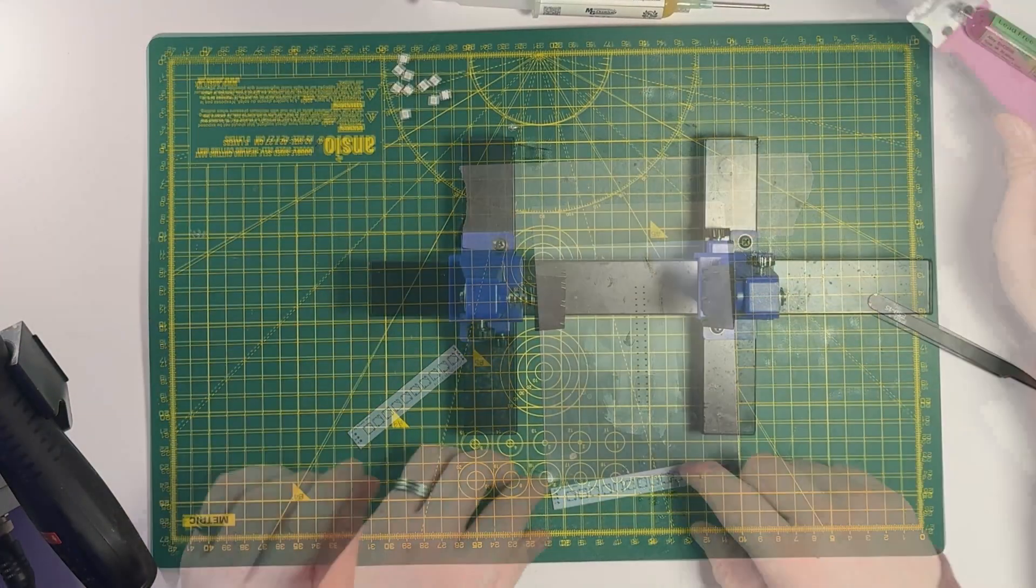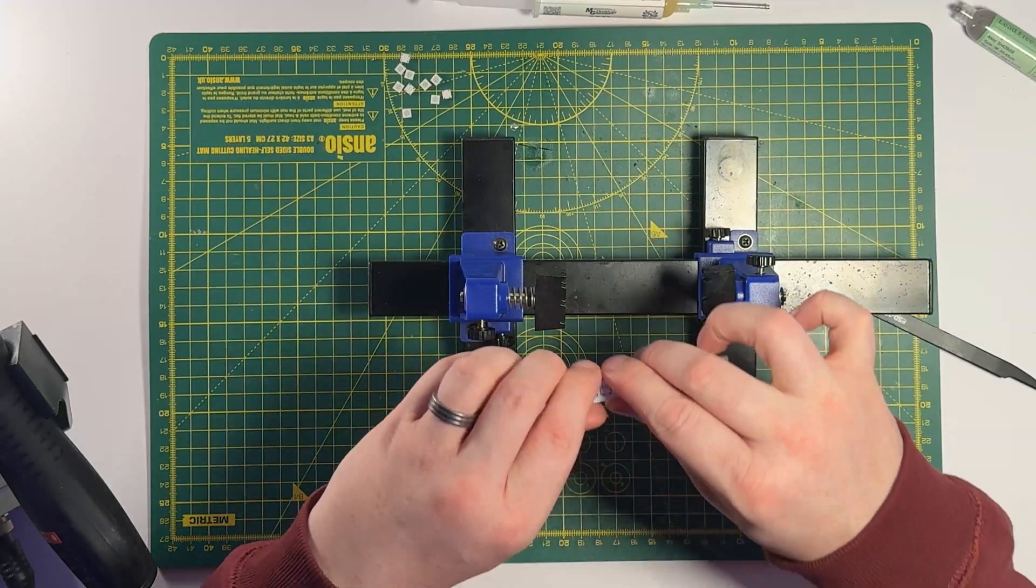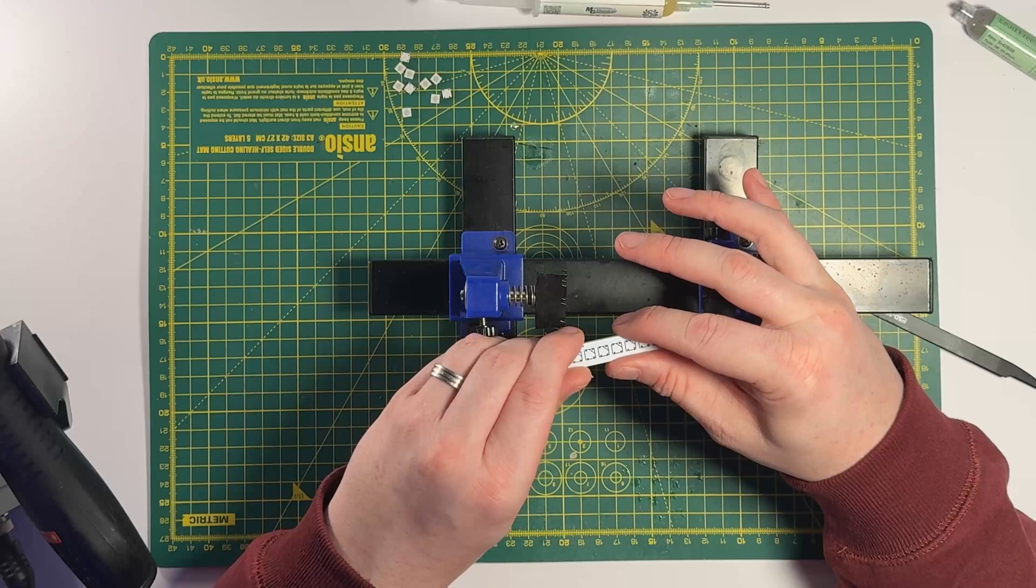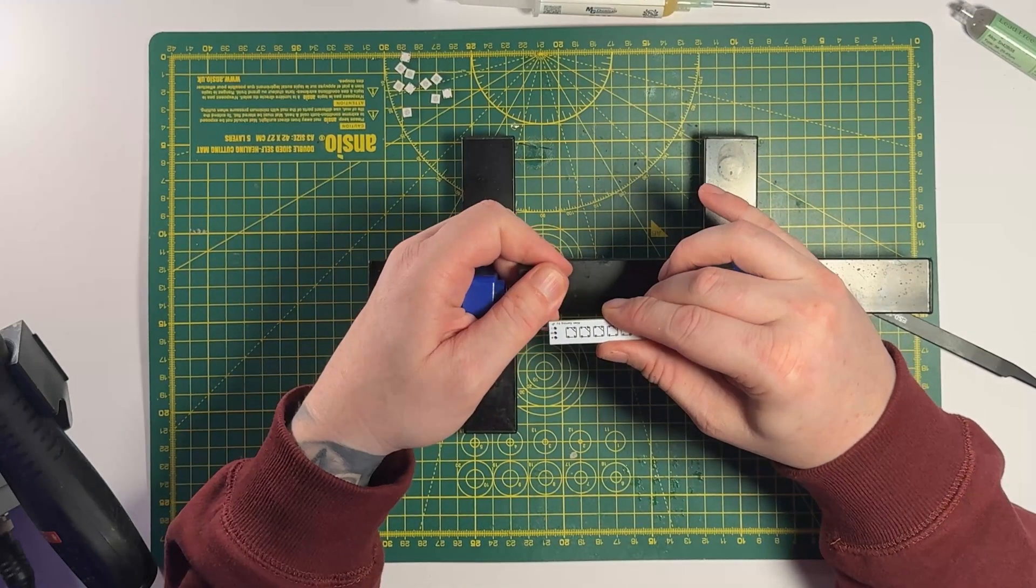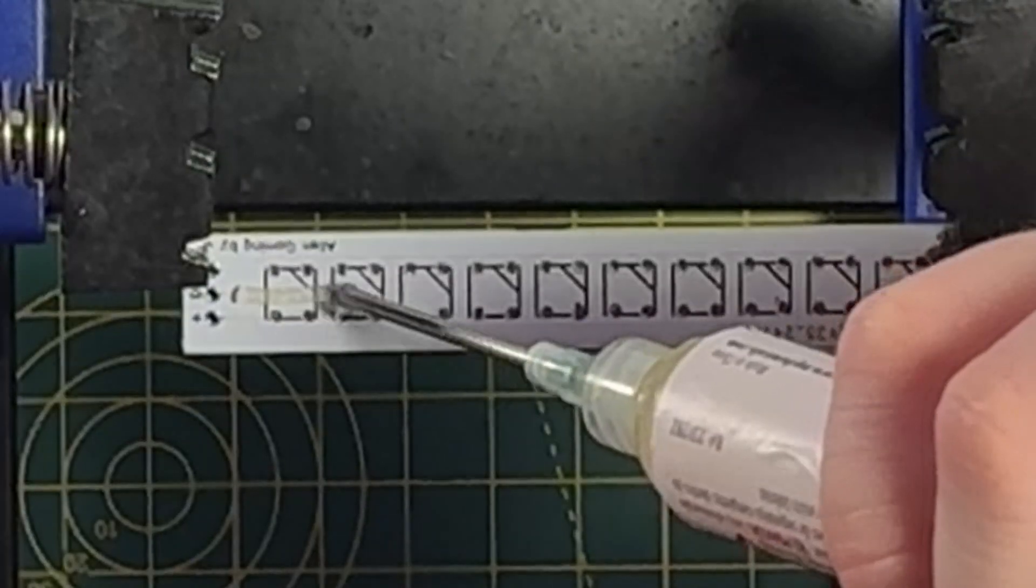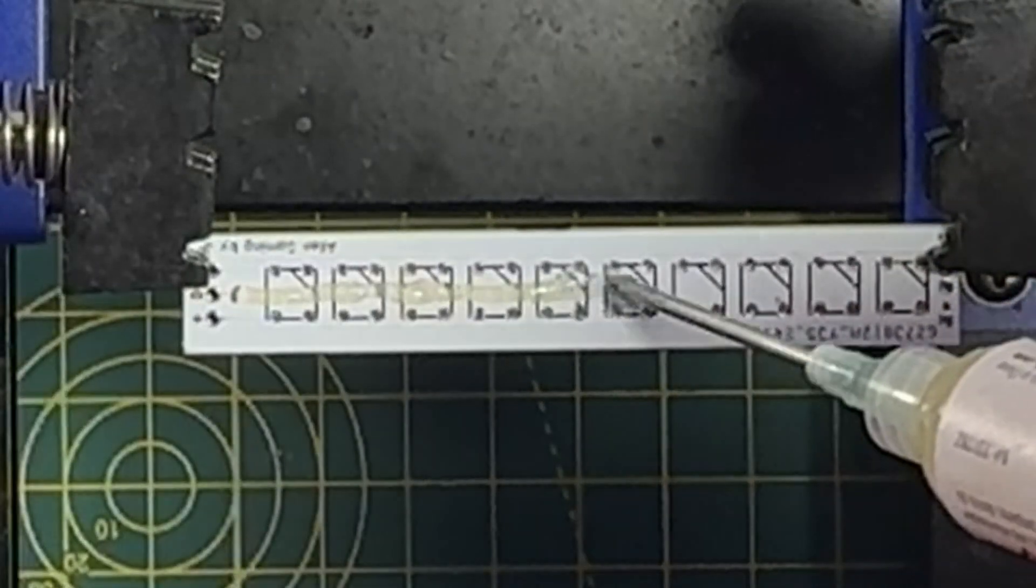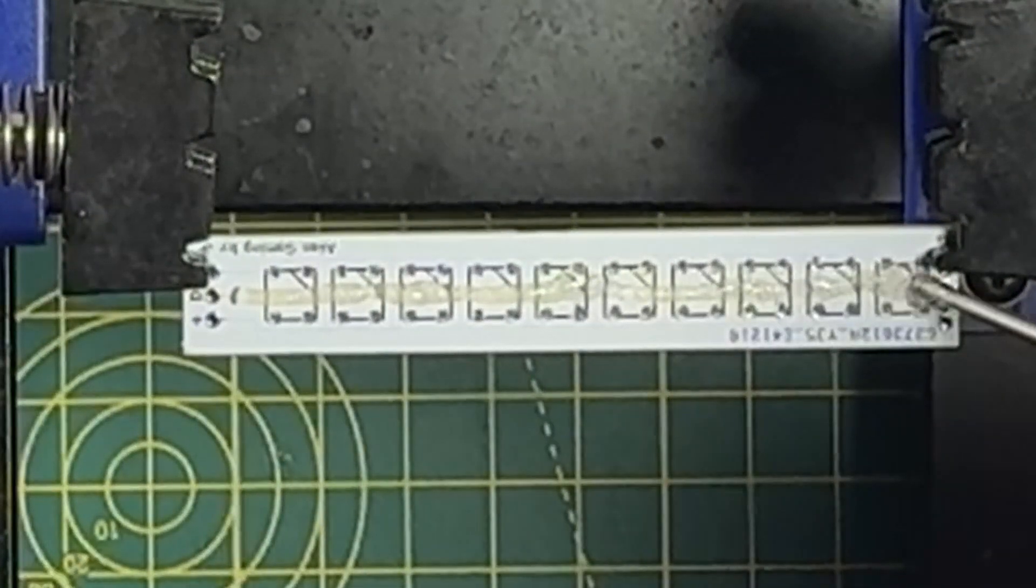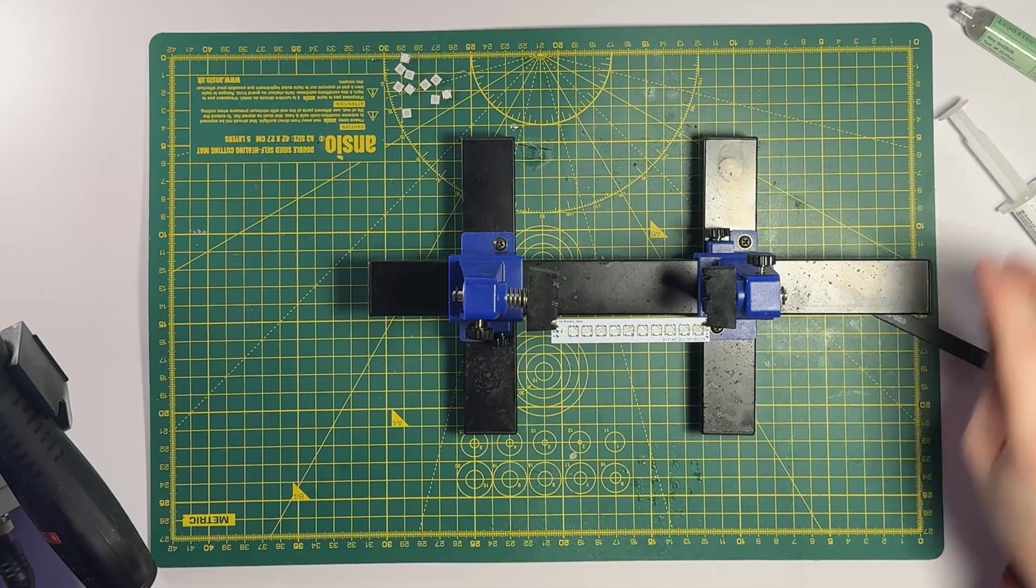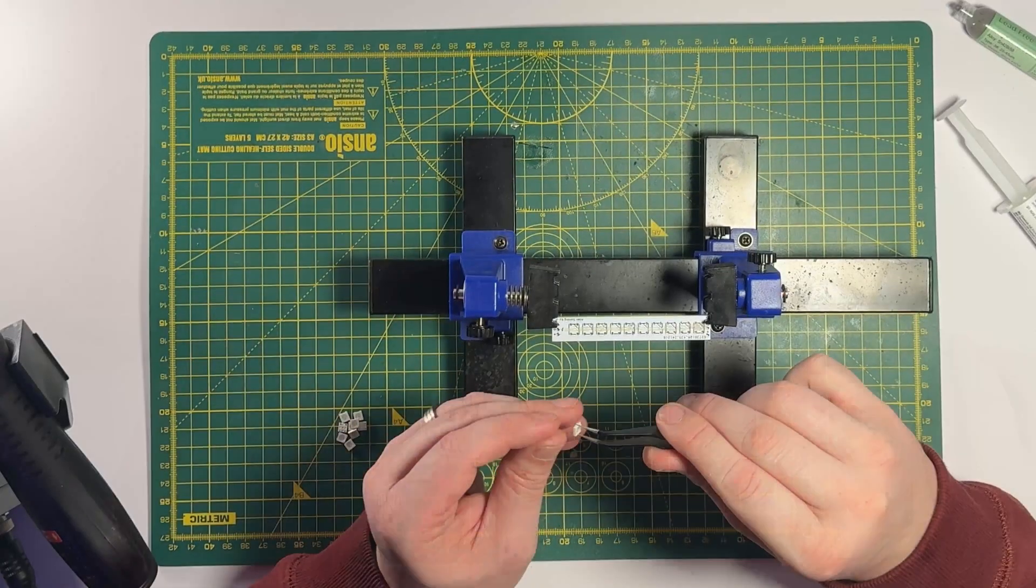So the next step is to get this clamp so we're going to clamp it onto here. Basically it just helps to hold it because we're going to be heating it from underneath. Now you don't have to do this but I put some flux right down the middle. There should be enough flux within the solder paste but I decided to do it anyway.